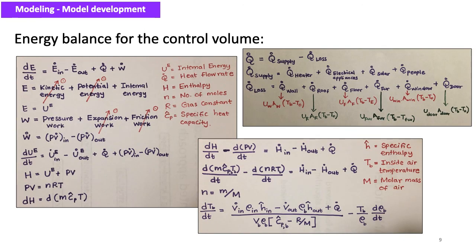The energy balance equation for the building unit is developed using the general energy balance considering a control volume. E_B is the total energy of the control volume, which consists of kinetic, potential, and internal energies. Air flow velocity inside the single zone building unit is small, so kinetic energy is not taken into consideration. The potential energy of the system is also of minor importance, so only the internal energy term is taken into account.